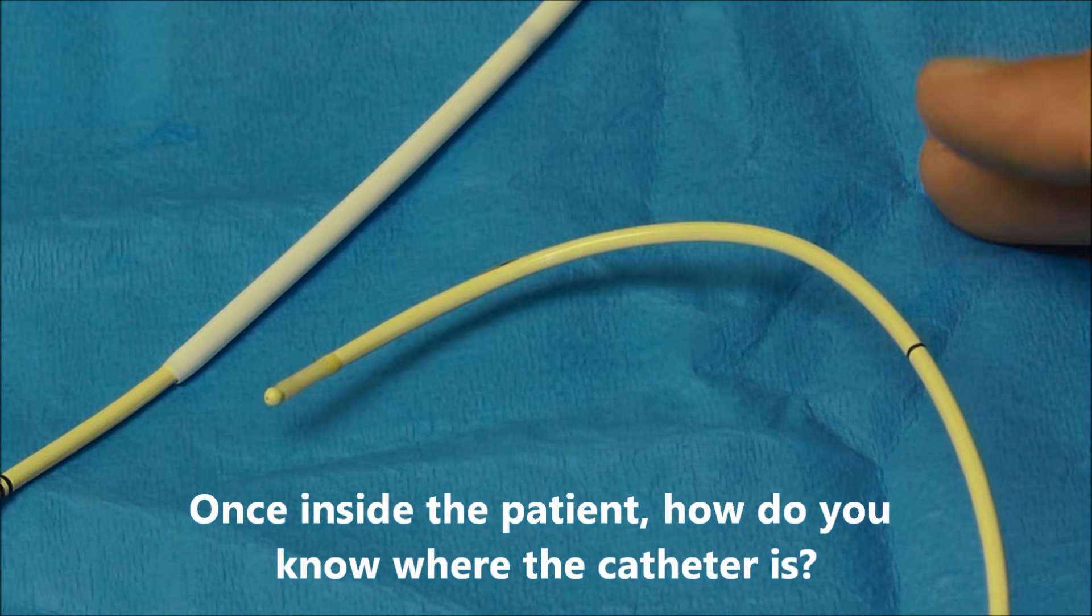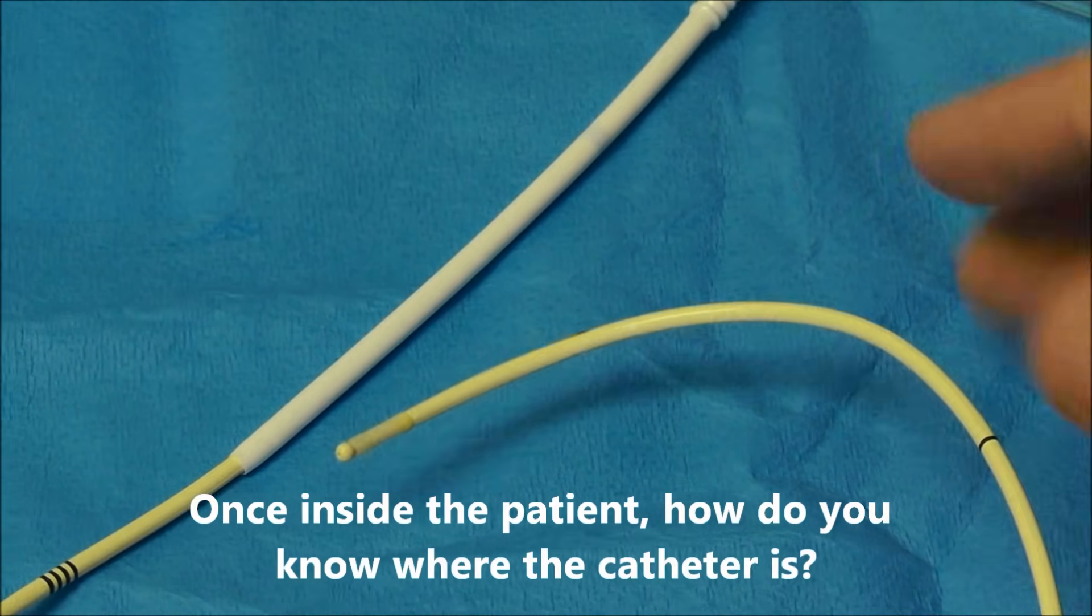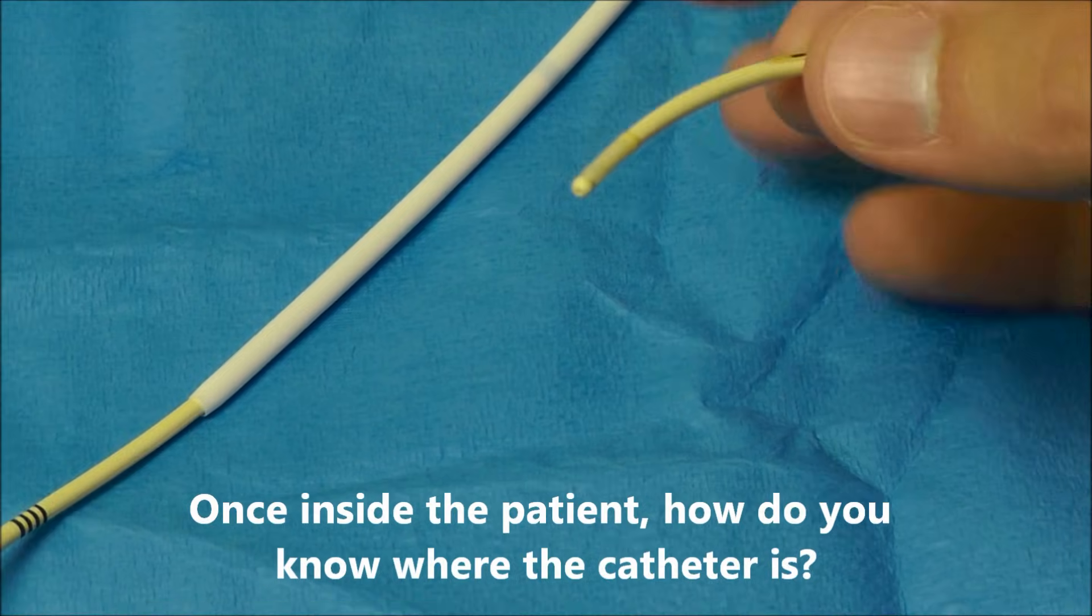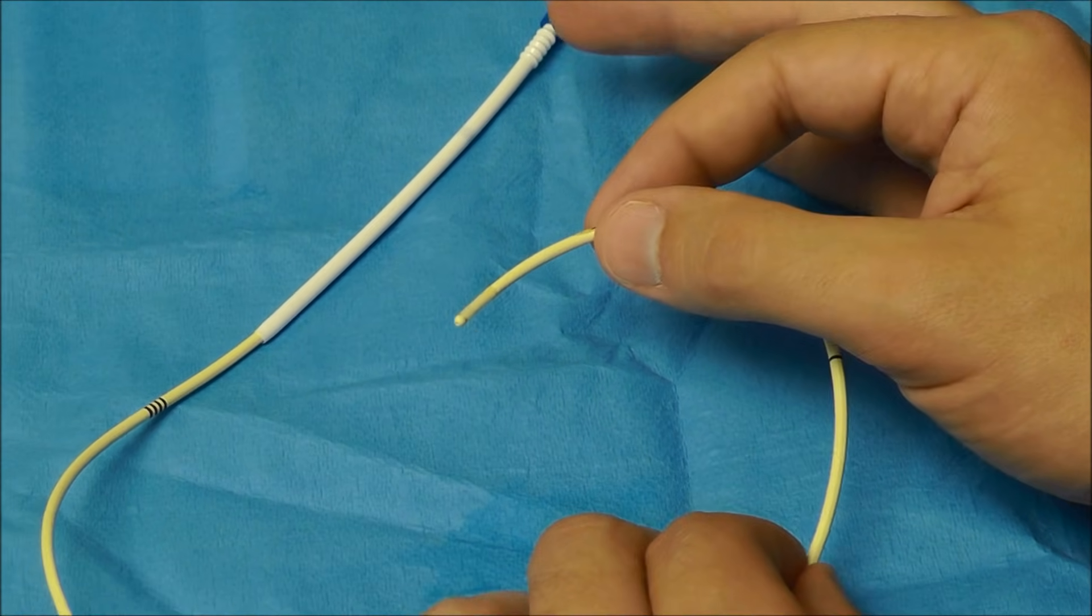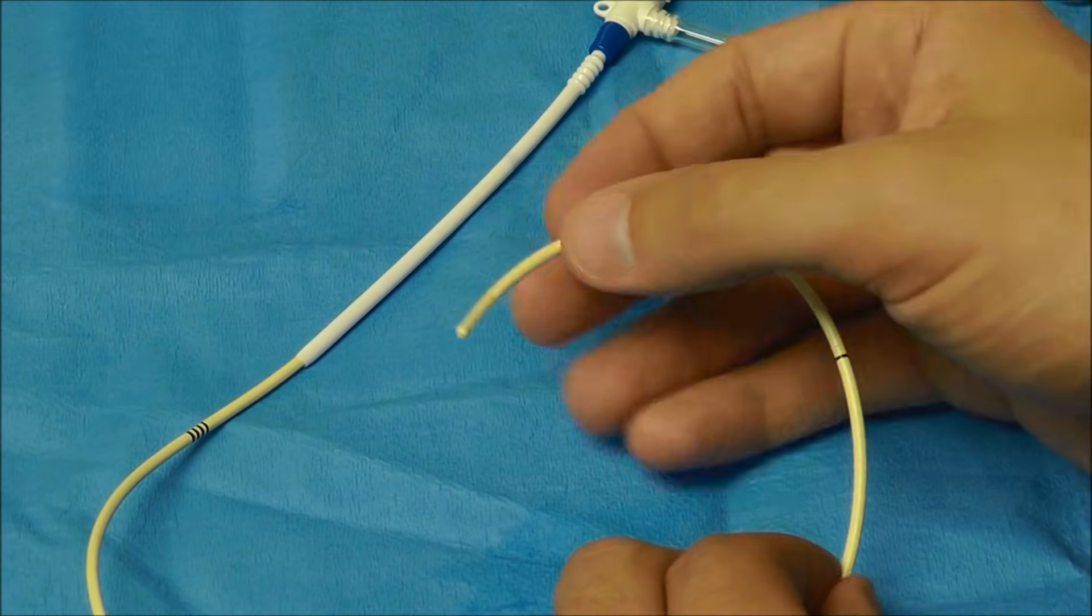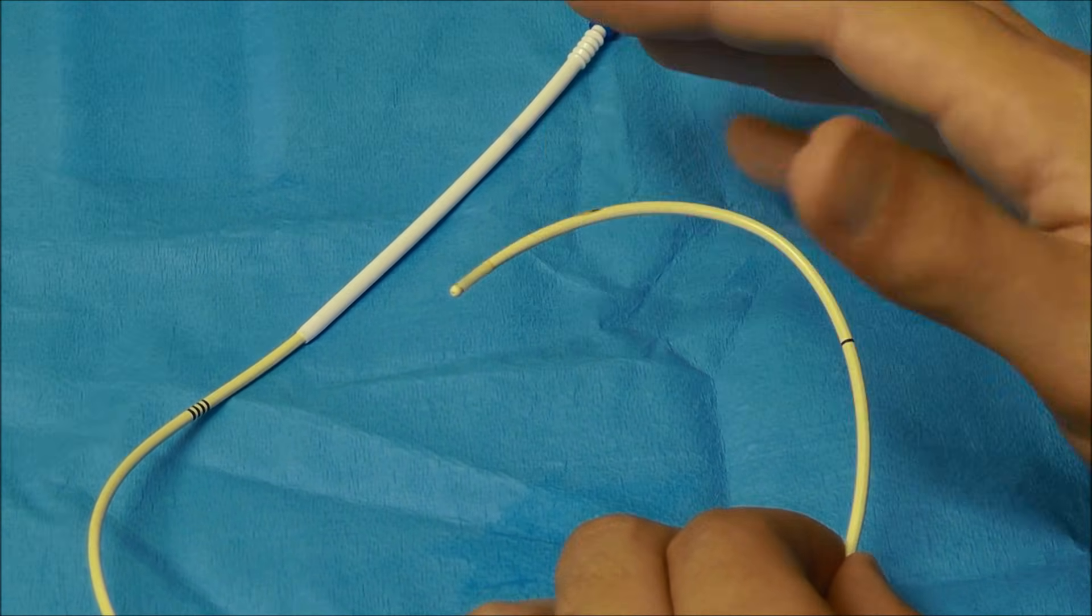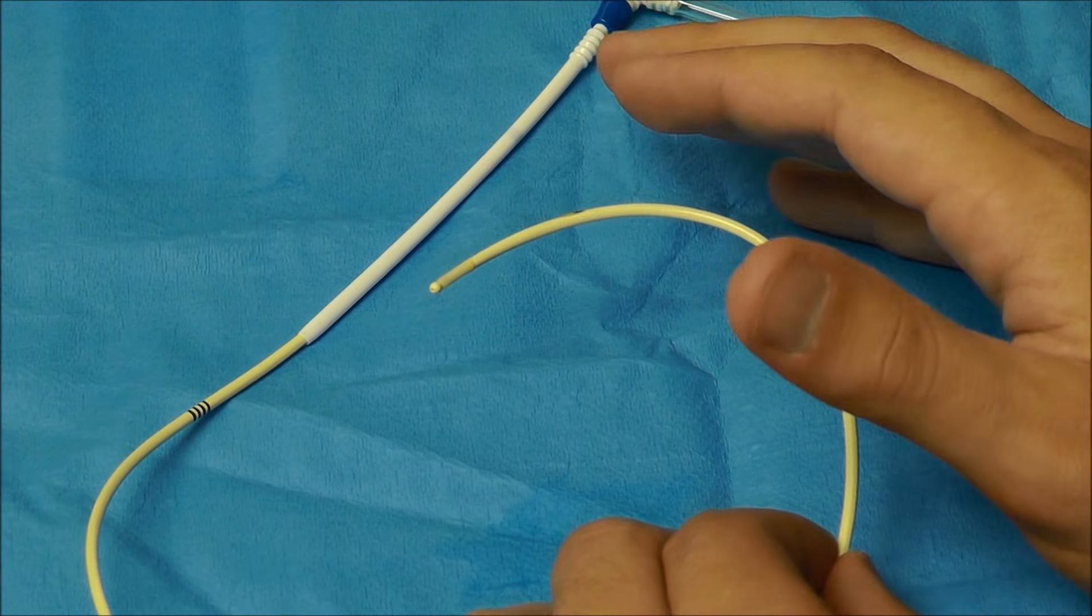The second question that you may have is how are you going to know whether this is truly in the pulmonary artery or whether it's coiled up? In other words, how do you know how far to advance this before stopping? And the answer there is that before starting,